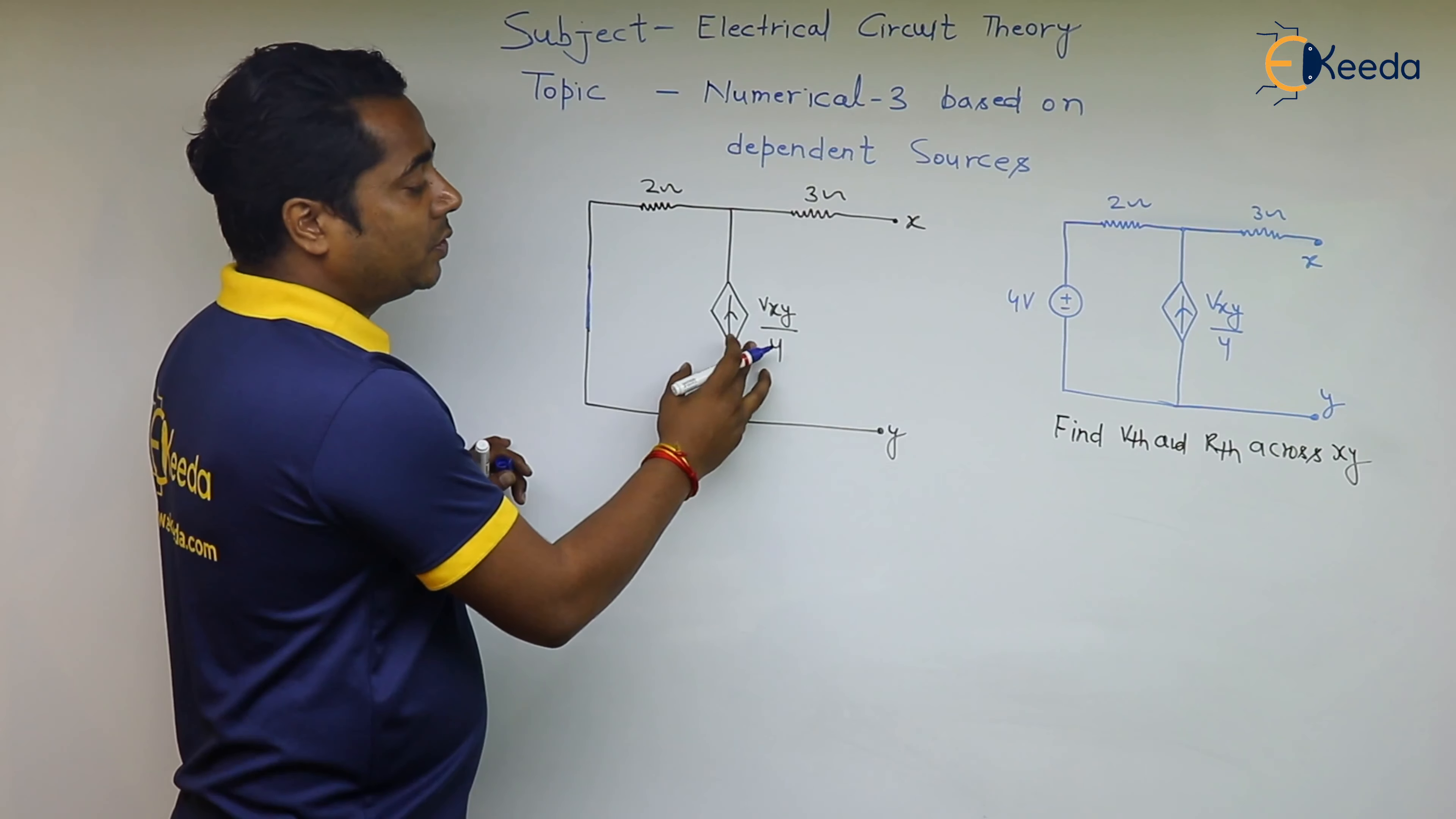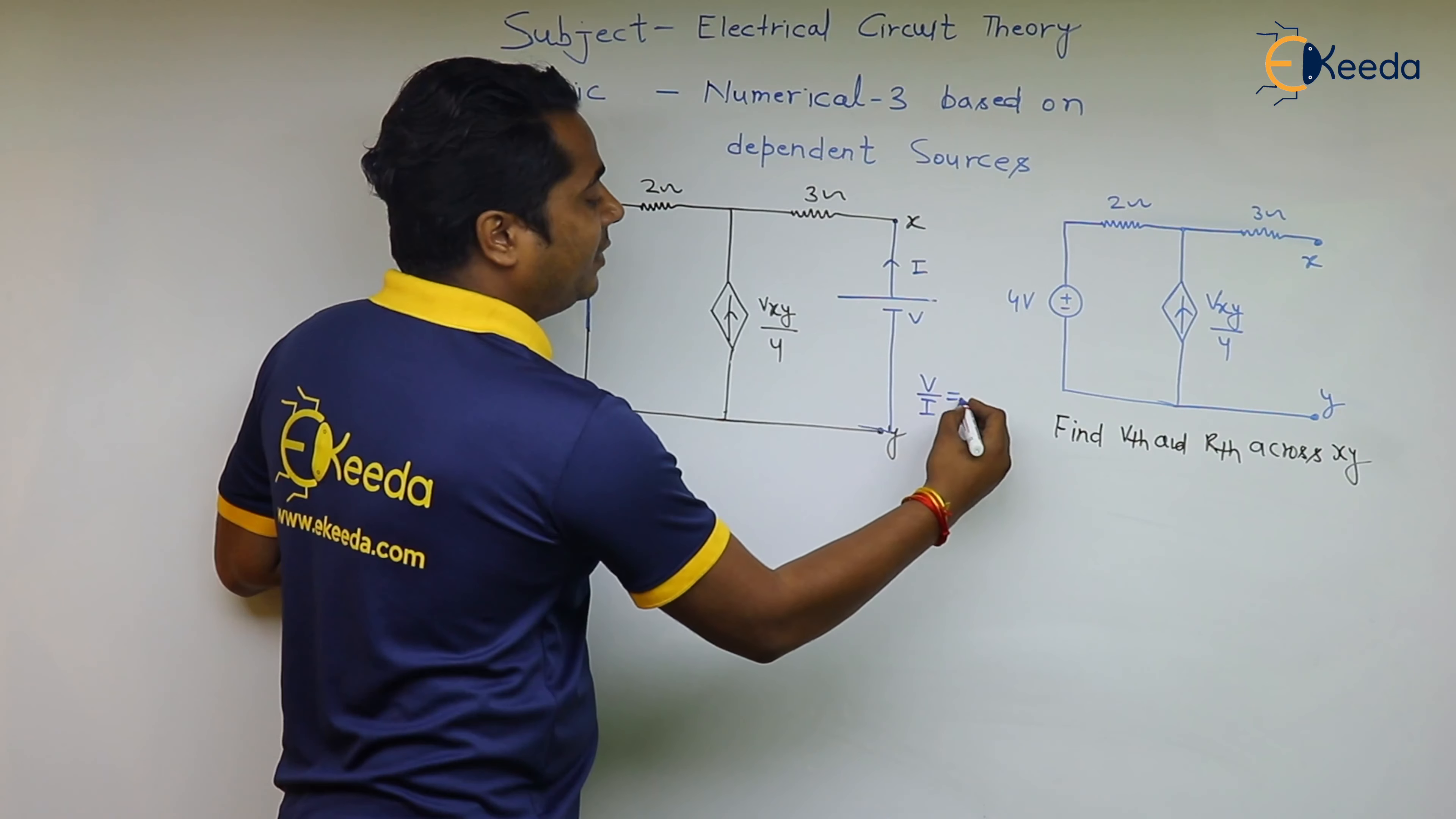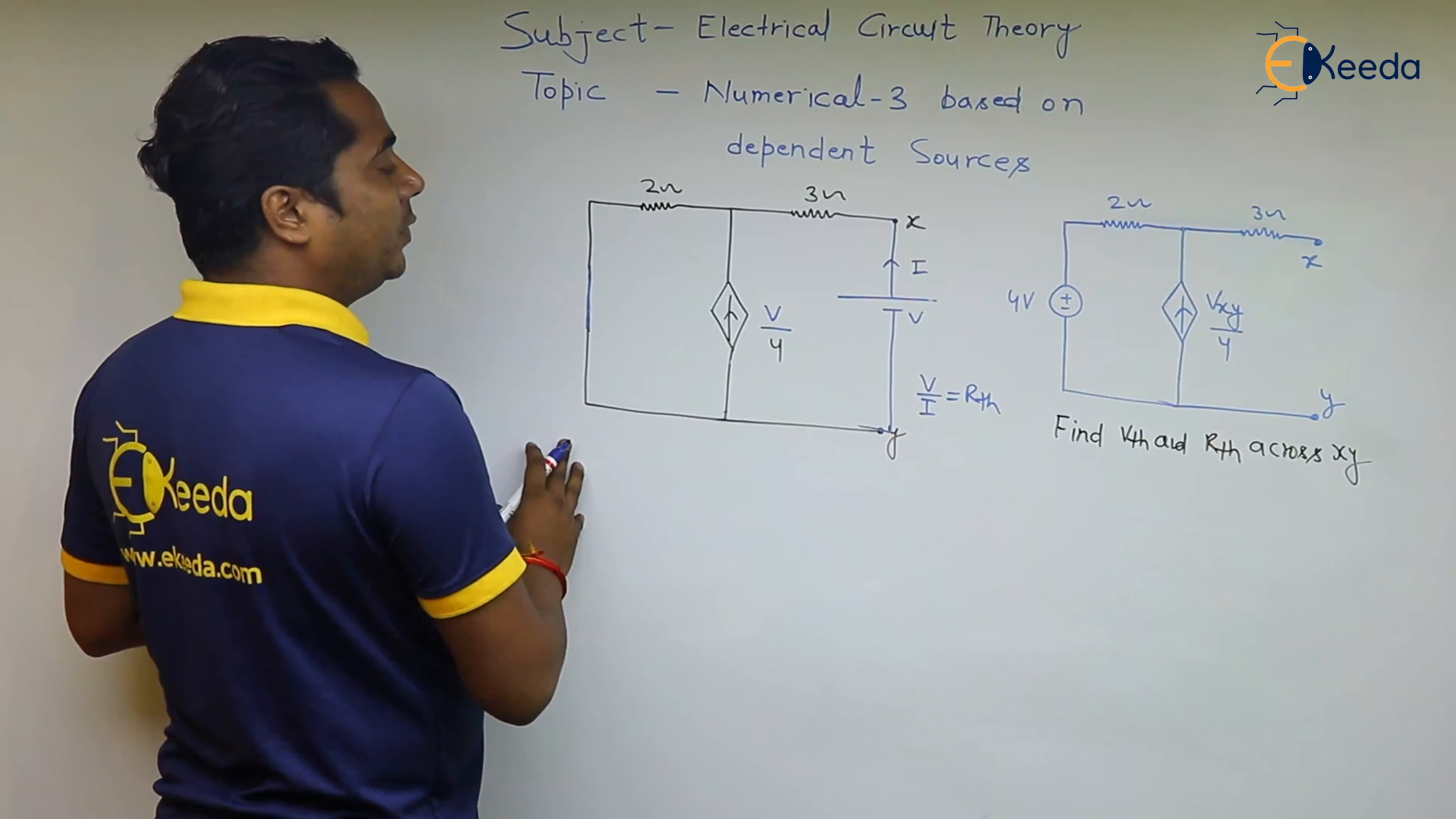Now applying the procedure, we have to connect one voltage V and the current I will flow from here. So whatever the ratio of V upon I will be your Rth. Now if this will be your V, then this will be your V by 4. This current is V by 4.